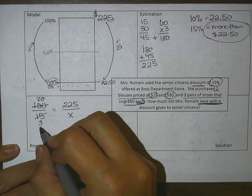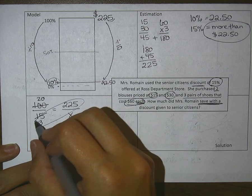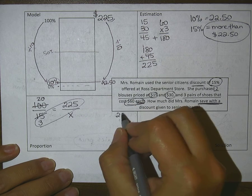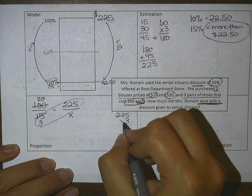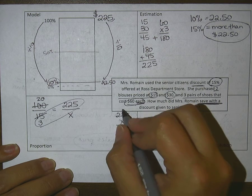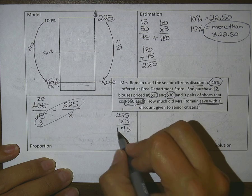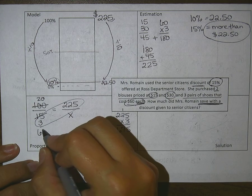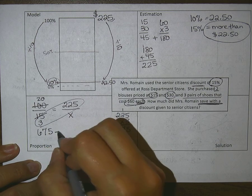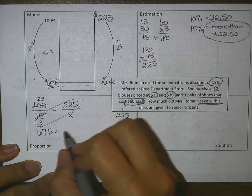I want to go ahead and cross-multiply. 225 times 3 is... 15, 6 plus 1 is 7, 3 and 2 is 6, so 675. I can write 675 on either side of my equal sign.